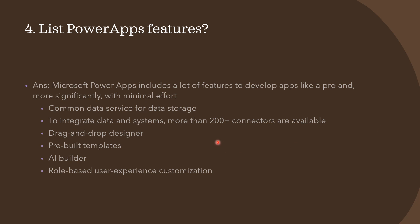The next question is: what are the Power Apps features? Microsoft Power Apps includes many features to develop apps with minimal effort. These include a common data service for storage, over 200-plus connectors to integrate data and systems, a drag-and-drop designer which is critical for low-code solutions, pre-built templates for common app types, an AI builder, and role-based user experience customization, which is critical from an end-user perspective.